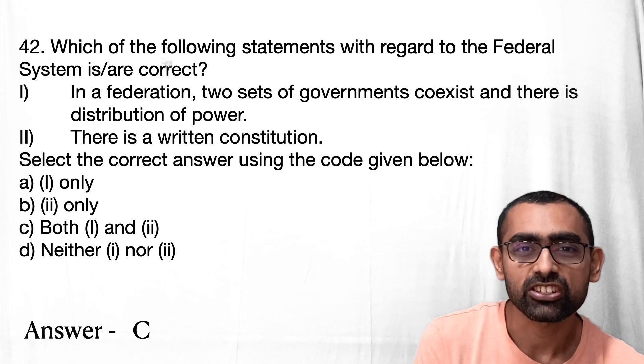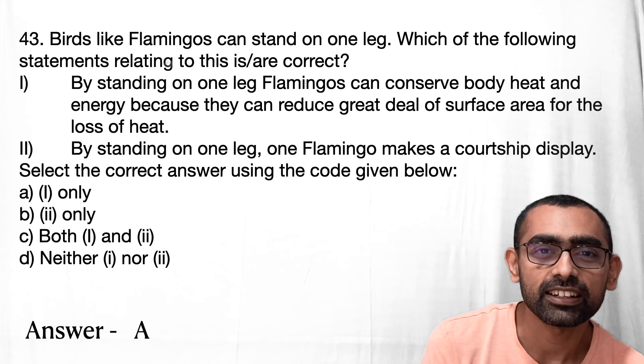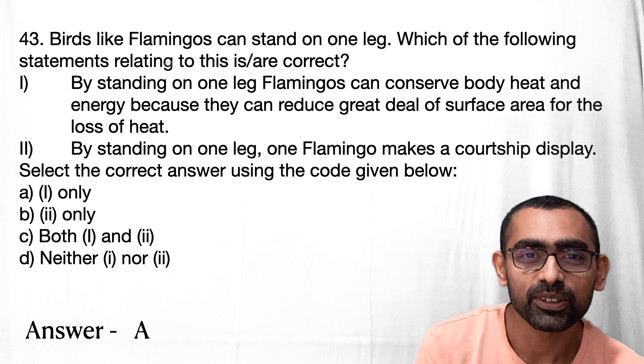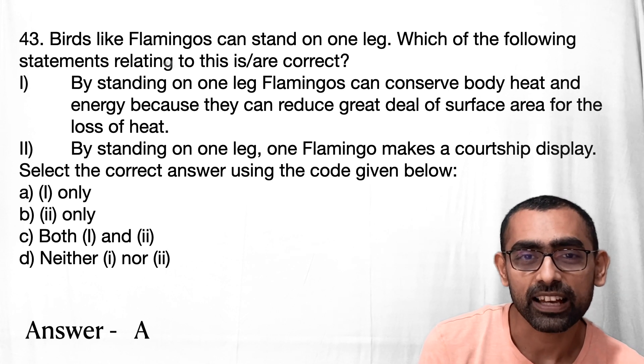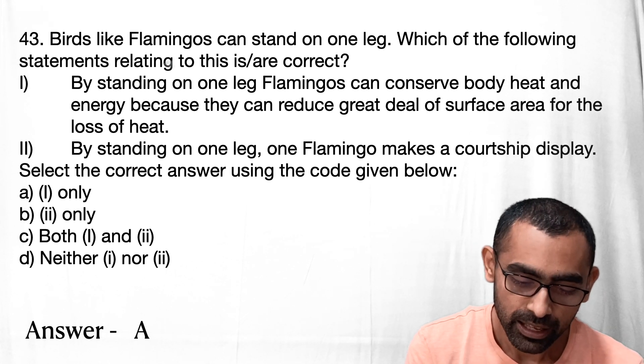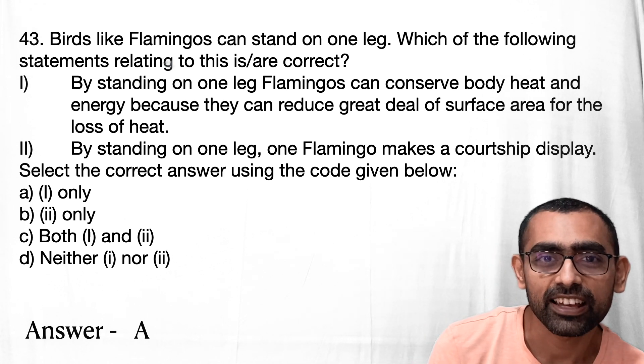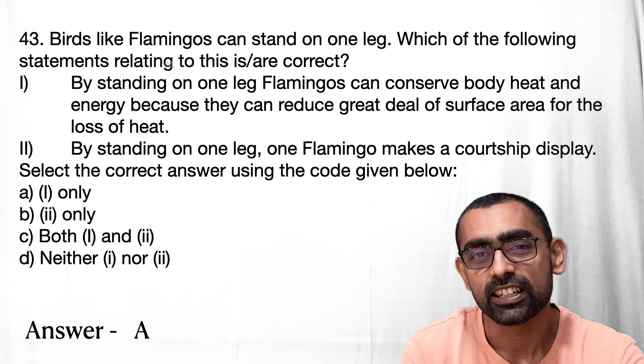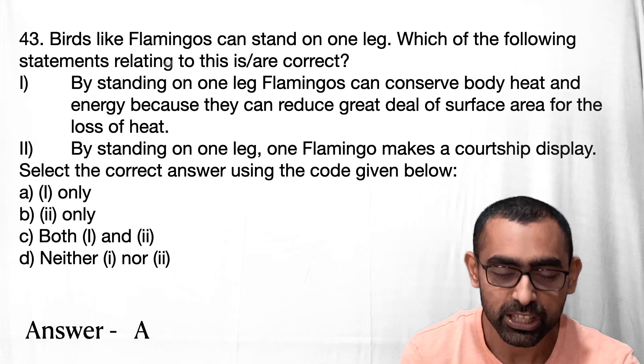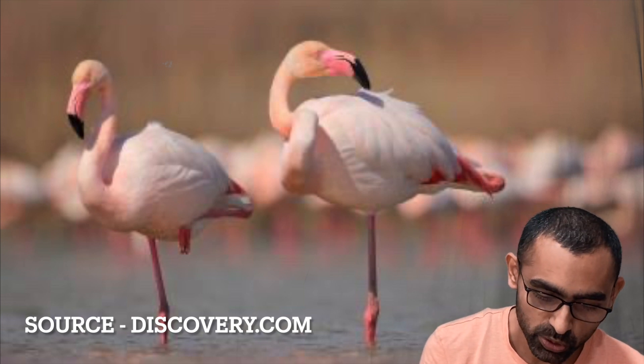Moving on to question 43, which is about flamingos. We know that flamingos are often seen standing on one leg. Option A is correct — it is about saving energy and conserving heat. The other option about courtship display is not correct because courtship display in flamingos is a much more elaborate process involving head movements, wings, and more. So only option one is correct.